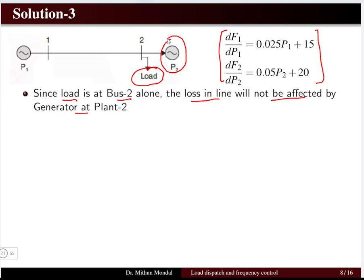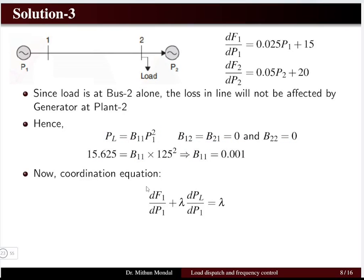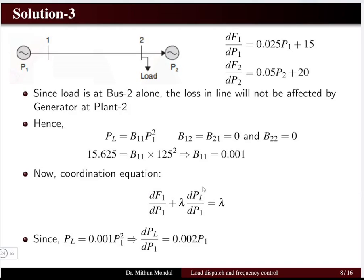Since the loss is unaffected by plant 2, the power loss equation reduces to PL = B11 × P1². The coefficients B12, B21, and B22 are all zero. With PL = 15.625 MW and P1 = 125 MW, we solve to find B11 = 0.001. The coordination equation is the incremental production cost multiplied by the penalty factor equals lambda. Differentiating PL gives dPL/dP1 = 2 × B11 × P1.